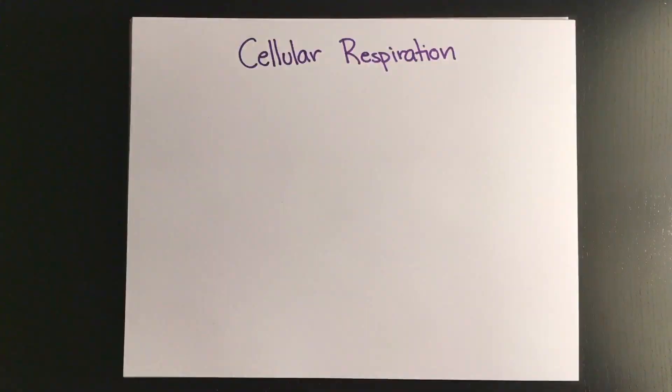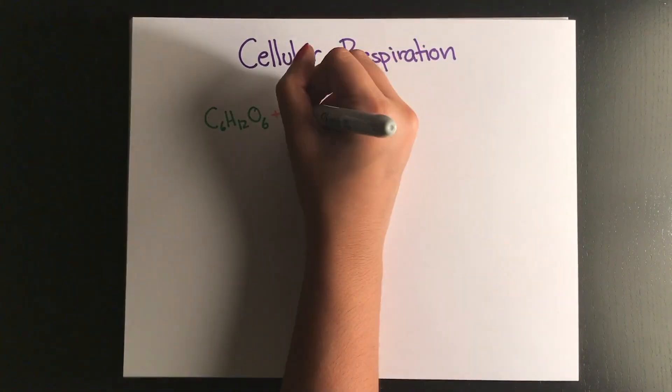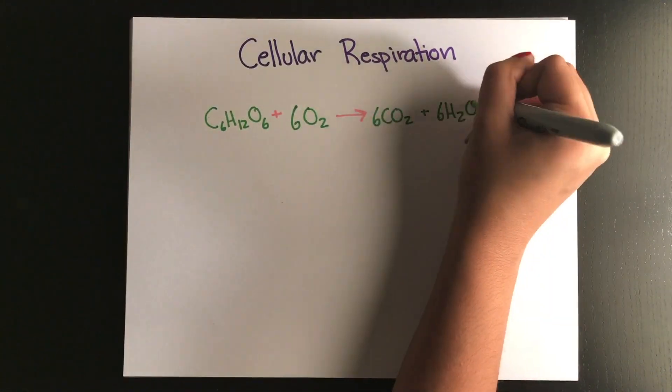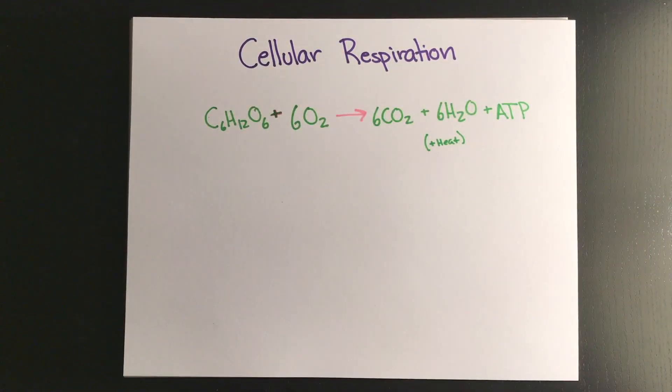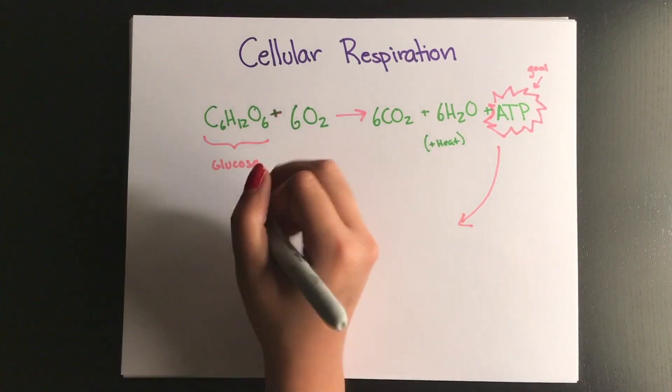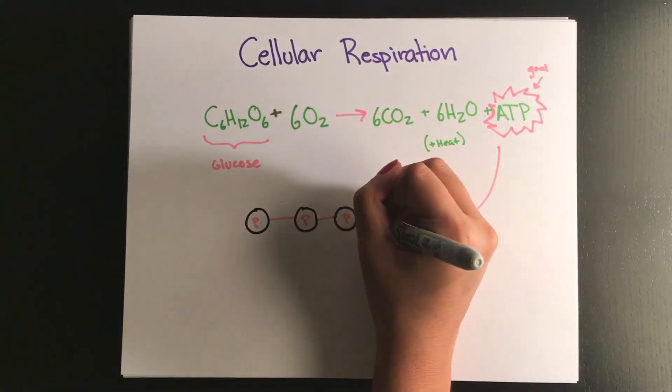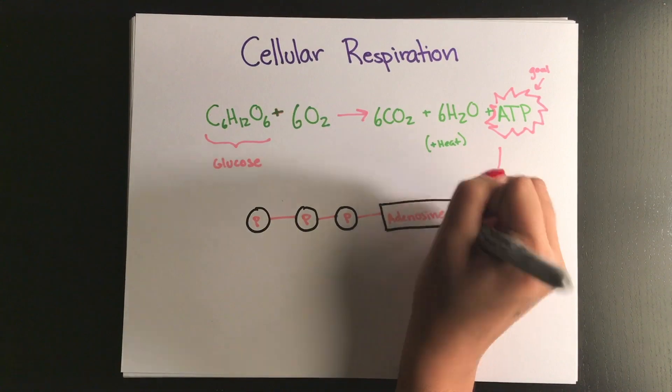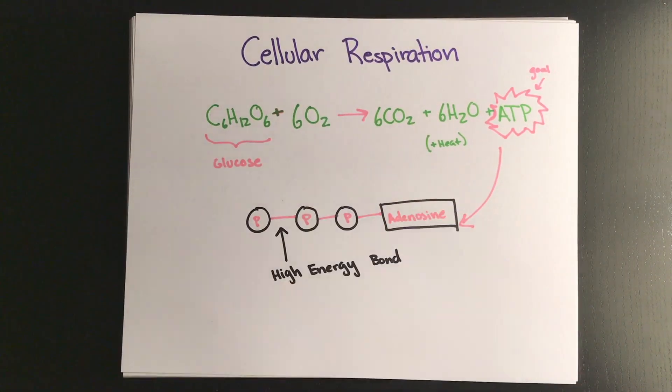Now the simplest way to conceptualize cellular respiration is by thinking of it as just a bunch of reactions that occur and their end goal is to make adenosine triphosphate which is ATP. ATP holds a high energy bond which when broken will provide energy to the cell and that's what it's always looking for.